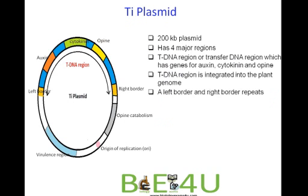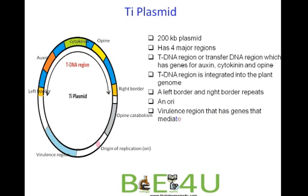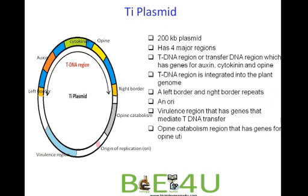The T-DNA region will be integrated into the plant genome. T-DNA has left border and right border repeats. There is also an origin of replication, a virulence region containing genes that mediate T-DNA transfer, and an opine catabolism region containing genes for opine utilization.